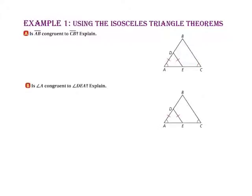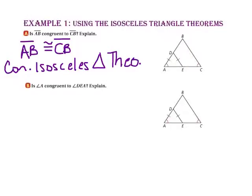Example 1 uses the Isosceles Triangle Theorem. Part A: Is segment AB congruent to segment CB? Since angle A of triangle ABC is congruent to angle C, the sides opposite those angles are also congruent. Since side BC is opposite angle A and side BA is opposite angle C, yes, side AB is congruent to side CB. Part B: Since side AD is congruent to side ED in triangle ADE, the angles opposite those sides — angle A and angle DEA — are also congruent, by the Isosceles Triangle Theorem.